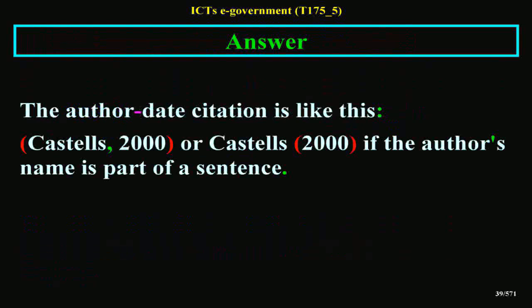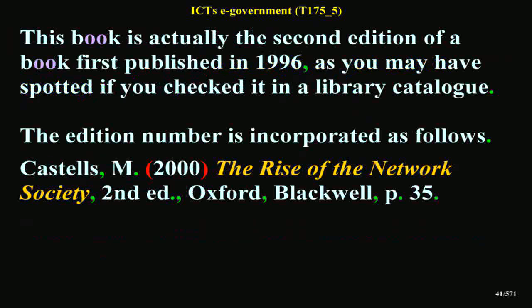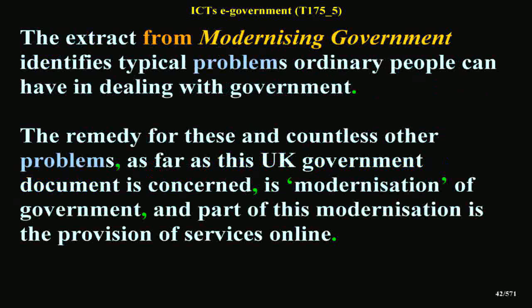Answer: The author-date citation is: Castells, 2000, or (Castells, 2000) if the author's name is part of a sentence. The reference is: Castells, M., 2000. The Rise of a Network Society. Oxford: Blackwell, p. 35. Not all publishers include a place of publication in book references, and sometimes the order of publisher and place is reversed. This book is actually the second edition of a book first published in 1996. The edition number is incorporated as follows: Castells, M., 2000. The Rise of a Network Society, 2nd ed. Oxford: Blackwell, p. 35.